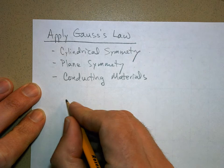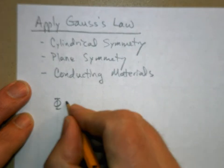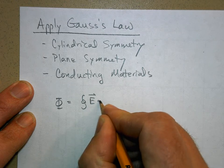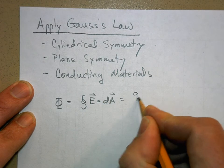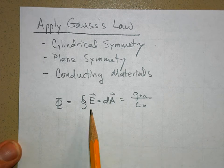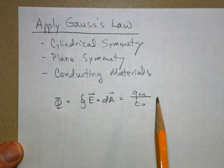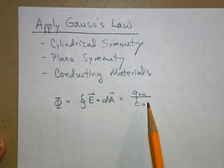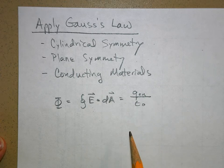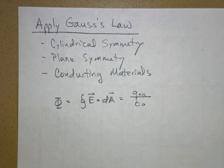Let's review. Here's Gauss's law: electric flux is equal to the closed surface integral of E·dA, which equals the charge enclosed over epsilon naught. The purpose of Gauss's law is to find E - the electric field due to some kind of isolated charge. You can only use this integral for certain highly symmetric situations. Last time we covered spherical symmetry and started cylindrical symmetry.